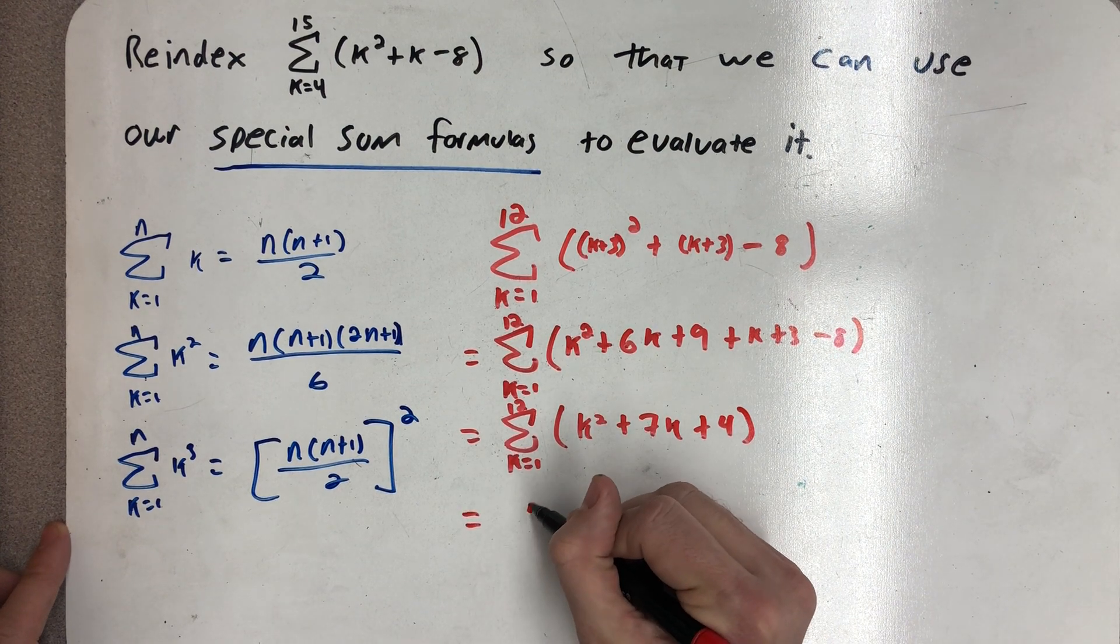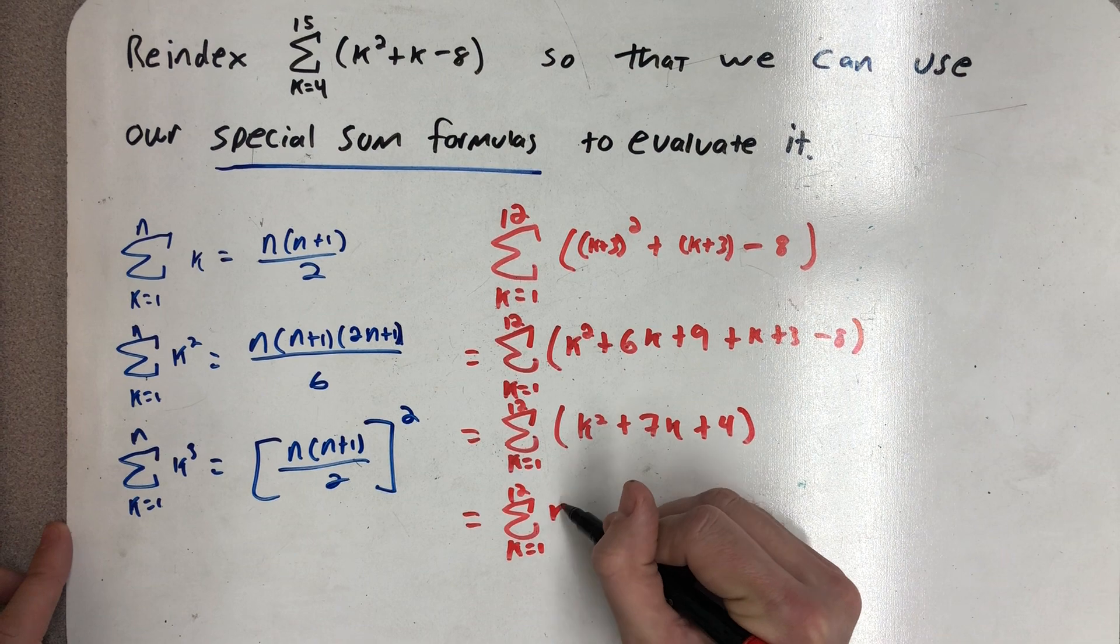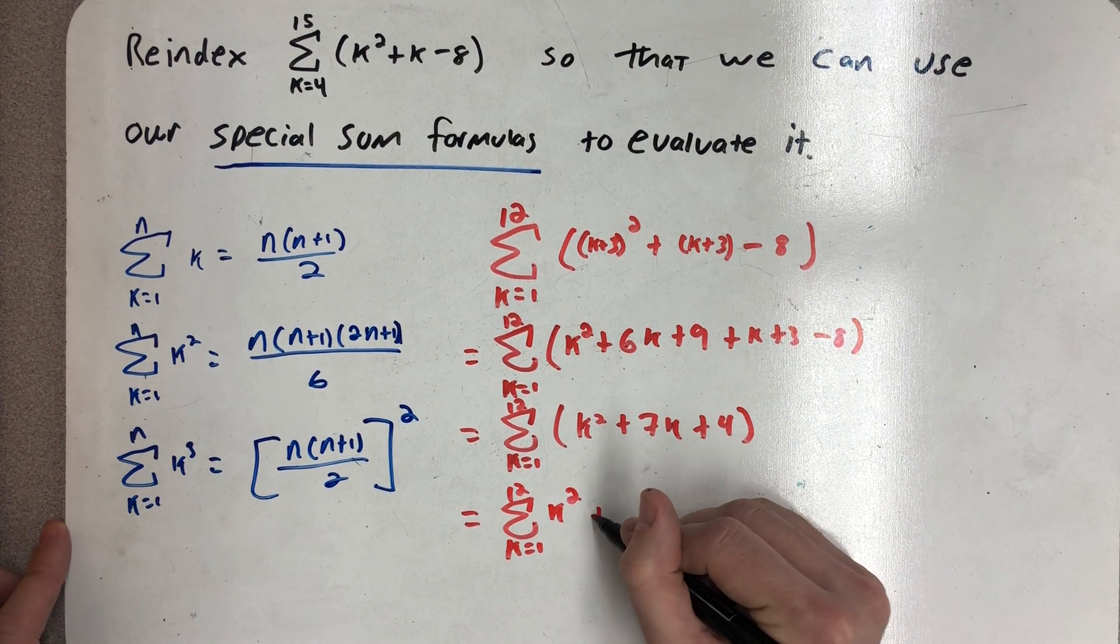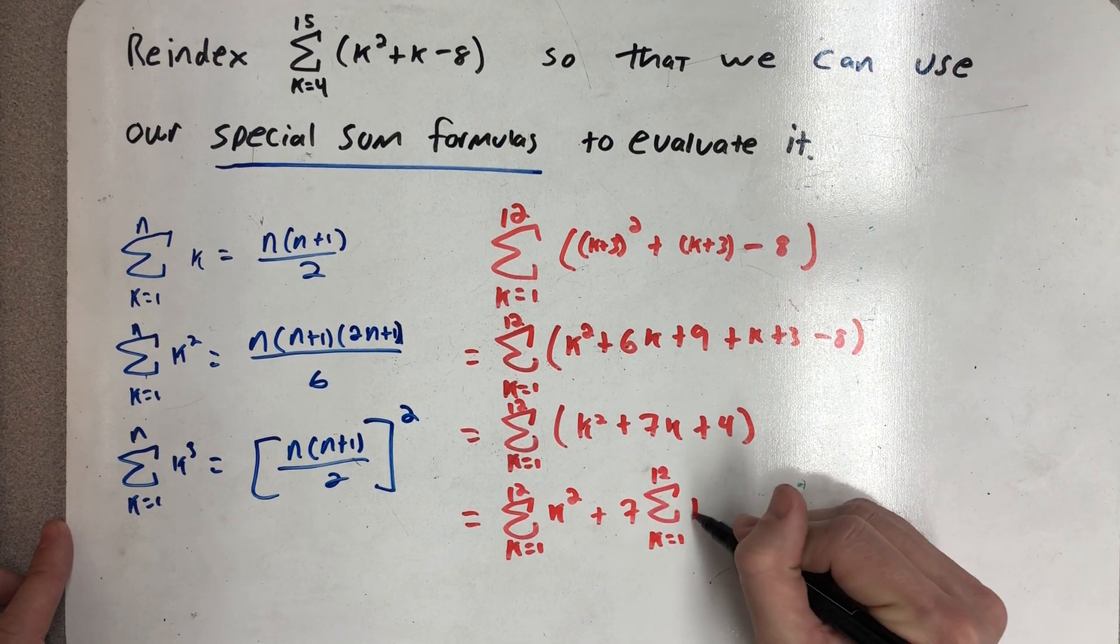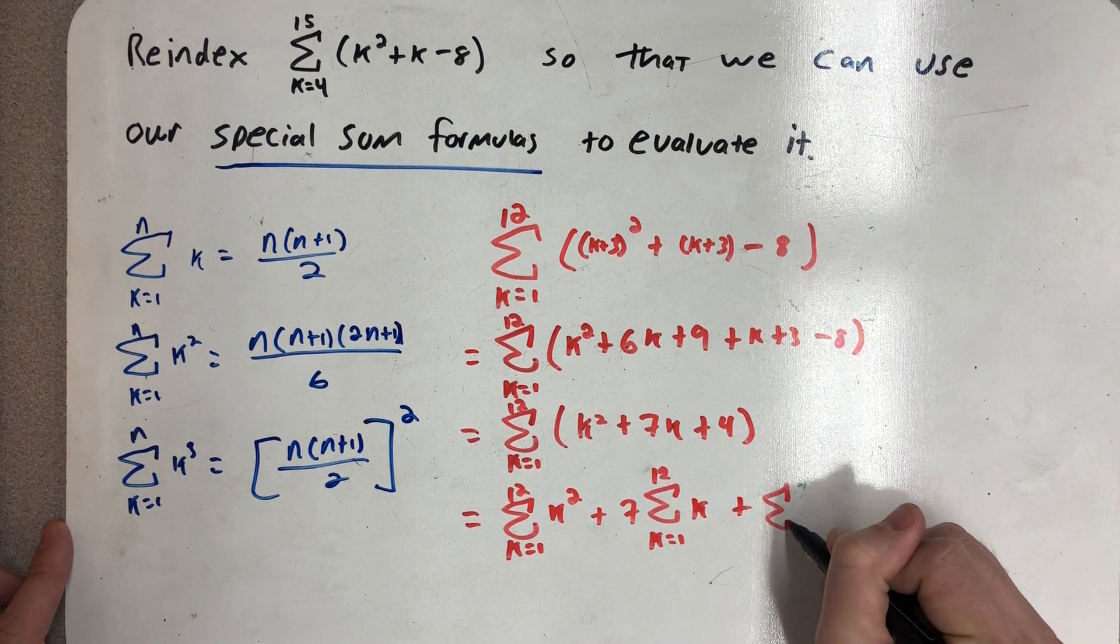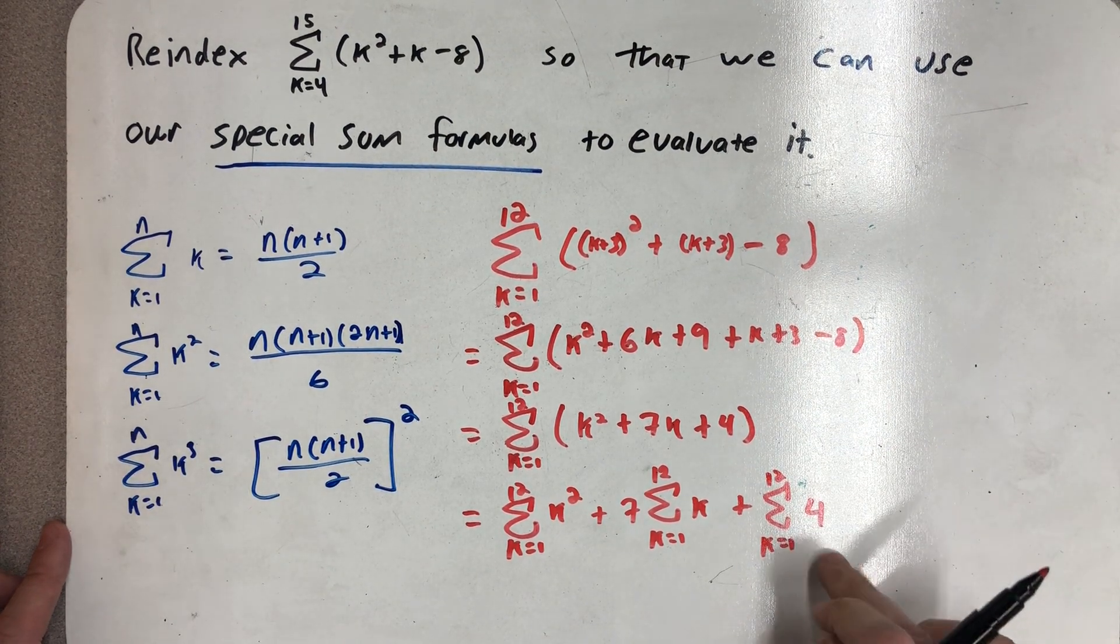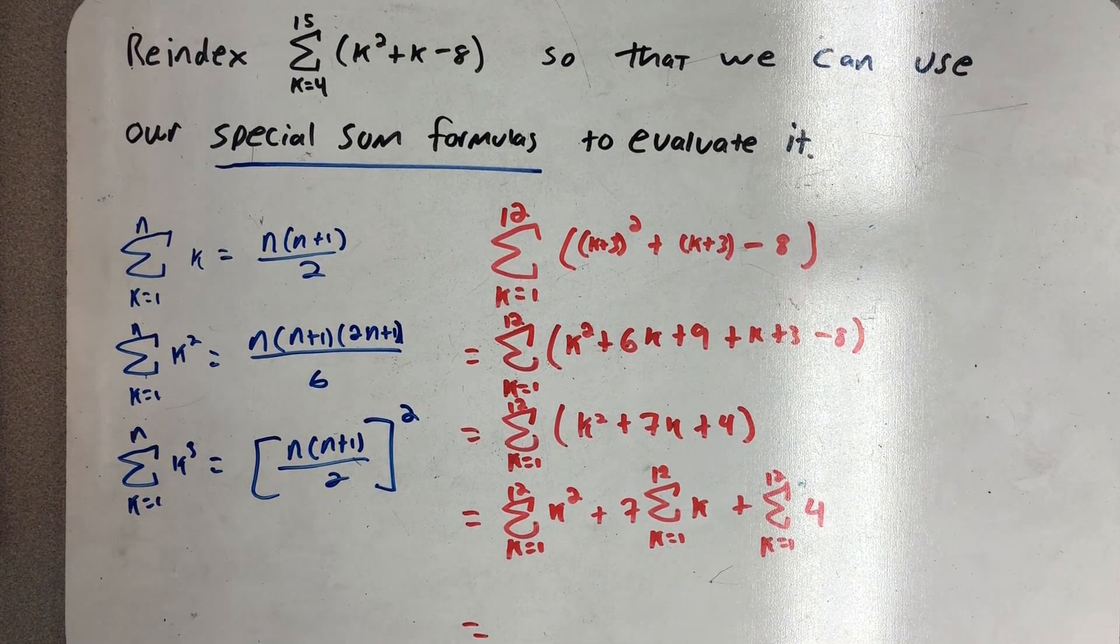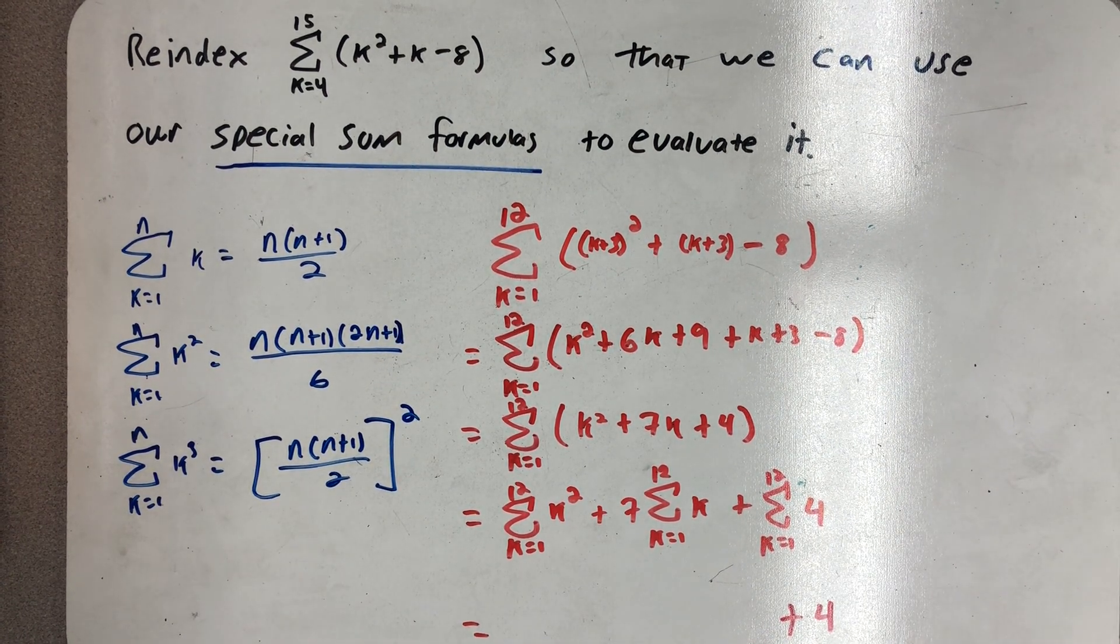So this sum and this sum are actually equal. This one I can split up using some sum properties and then apply our special formulas. In this last part I'm really just adding 4 to itself 12 times so I'm going to get 48.